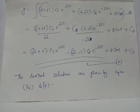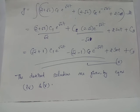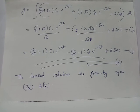Integrating both sides with respect to t, we obtain y = (2 + √2)C₁e^(√2·t) + (2 - √2)C₂e^(-√2·t) + 2cos(t) + C₃, where C₃ is the constant of integration. This equation 5 is the desired solution corresponding to the dependent variable y.